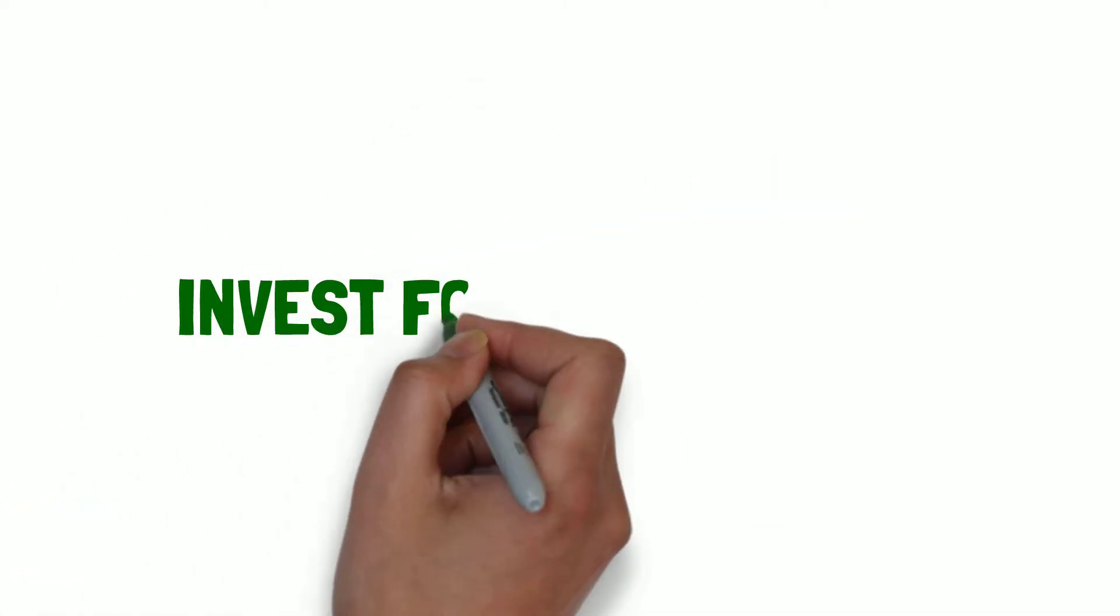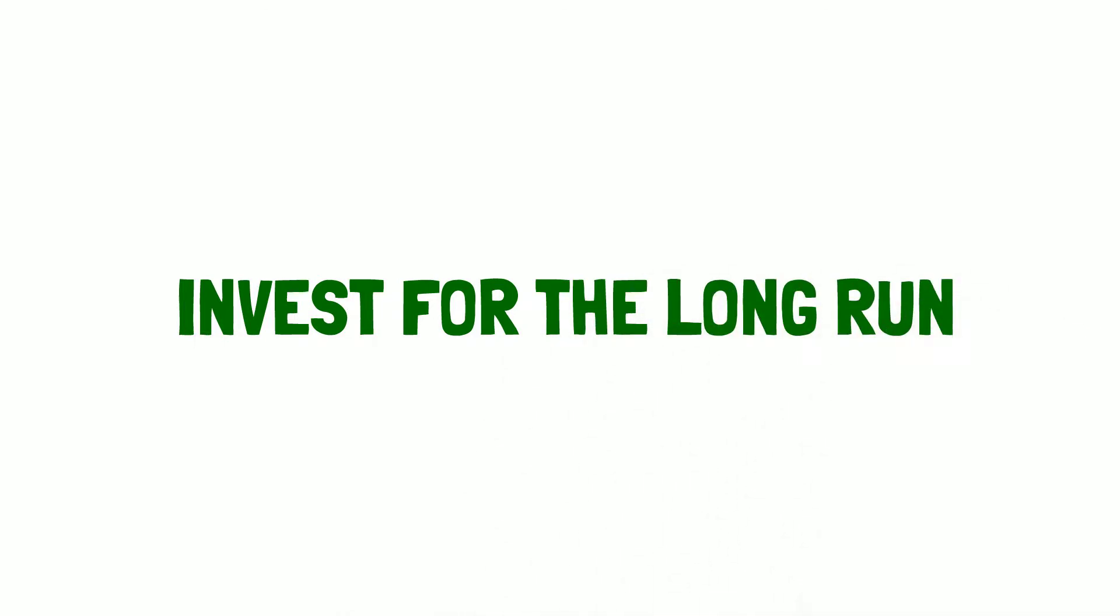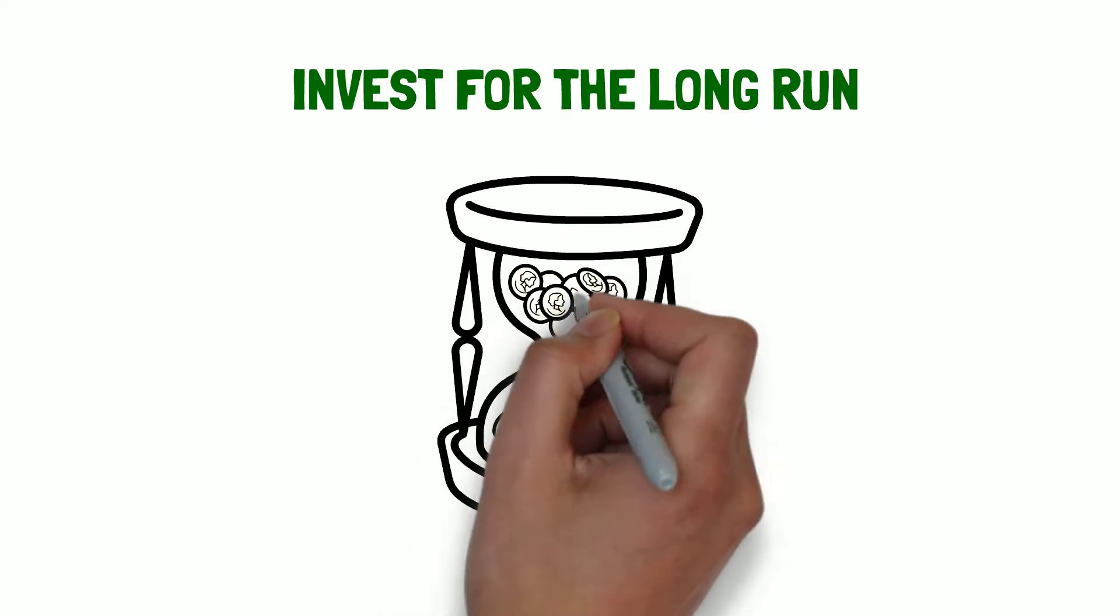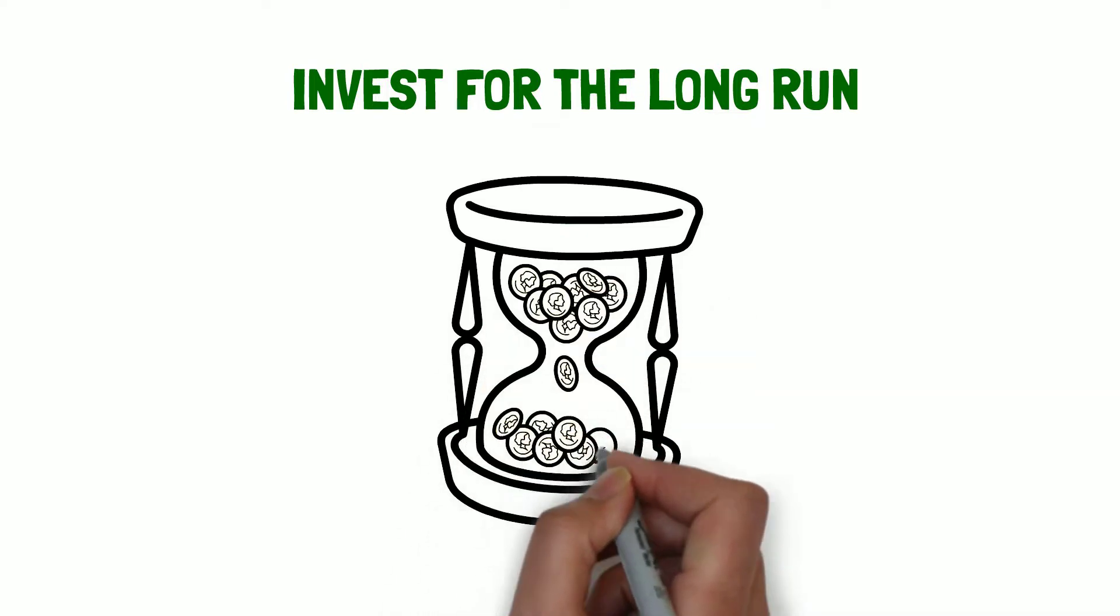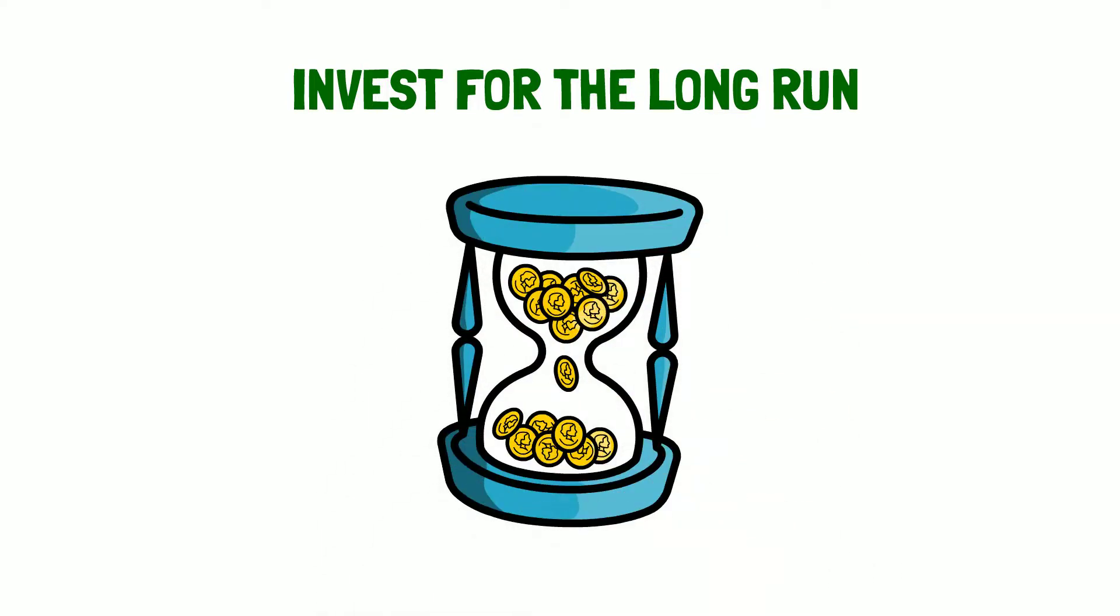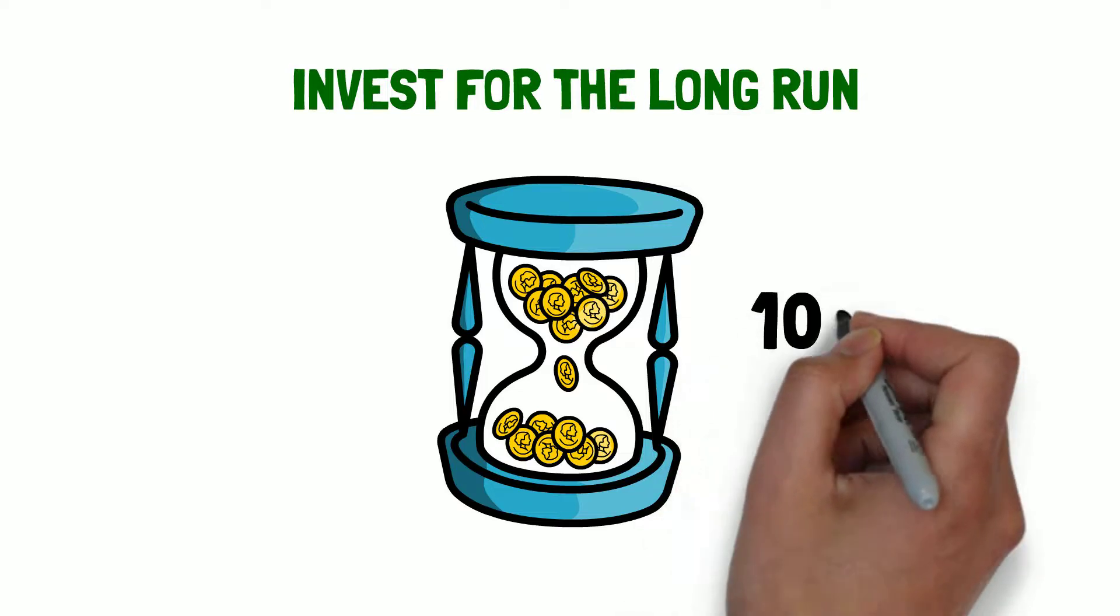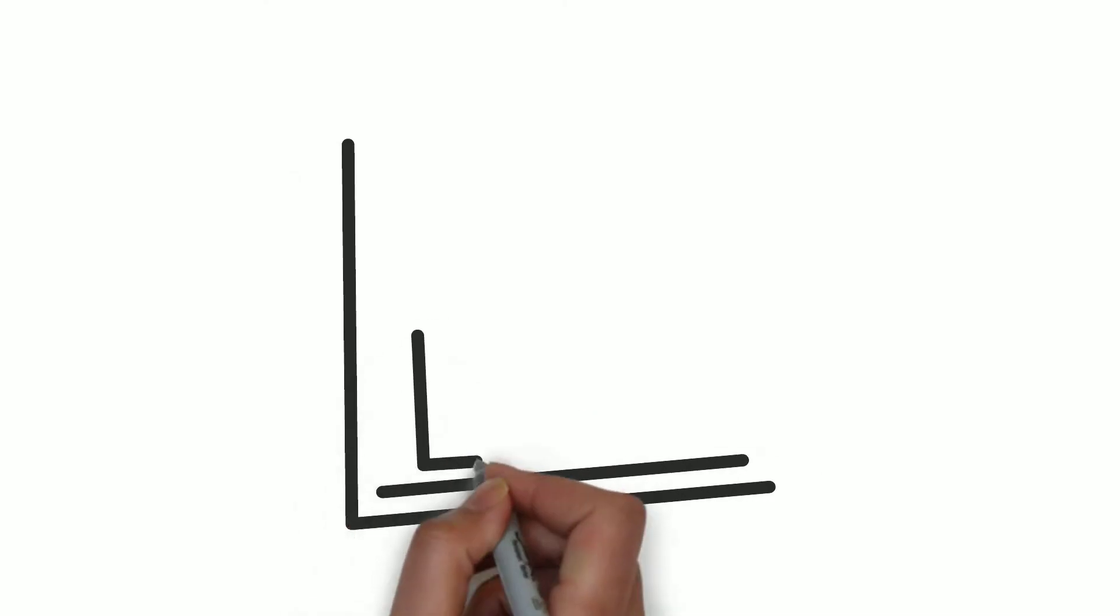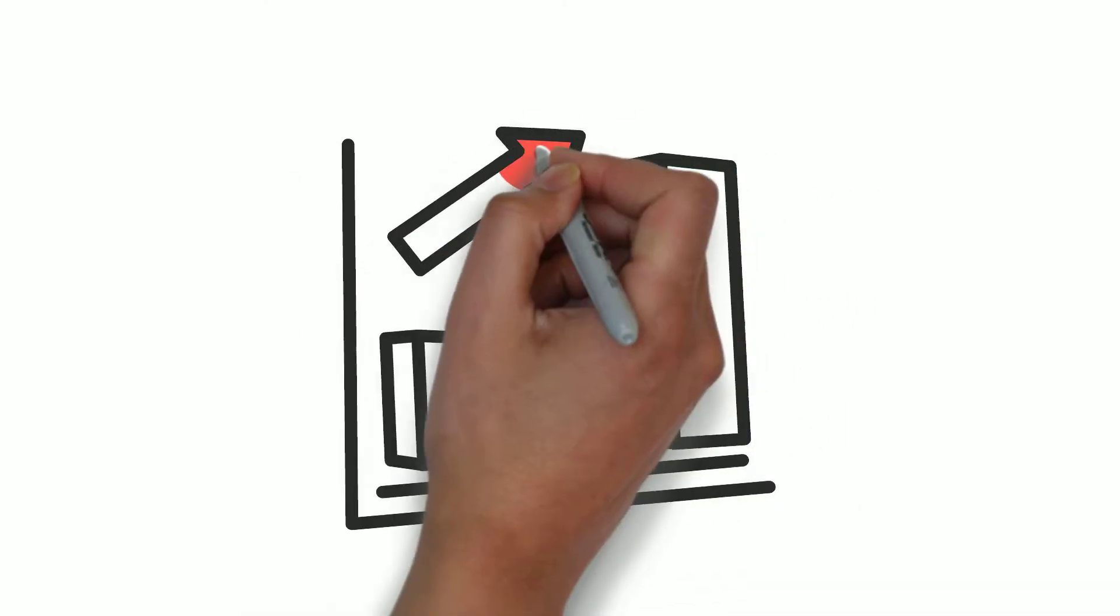The second lesson is to invest for the long run. Warren Buffett says that if you aren't thinking about owning a stock for 10 years, don't even think about owning it for 10 minutes. You should only invest in companies that you are willing to hold for at least 10 years. You should analyze if the company has a durable competitive advantage and can grow its profits in the long run.